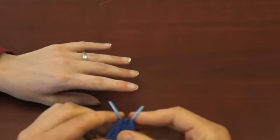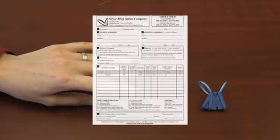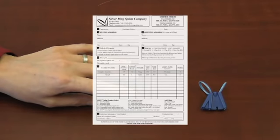Once you find a size combination that fits well, record it on an order form. You do not need to write that the boutonniere splint will be used to correct lateral deviation.